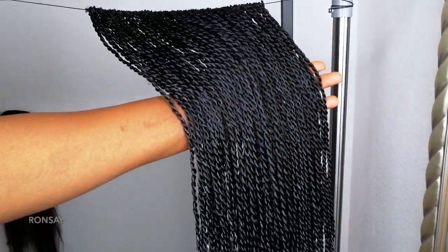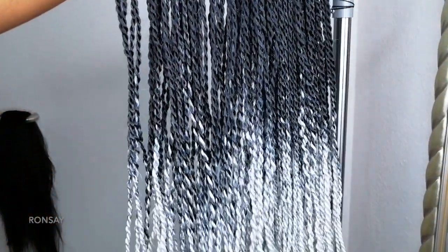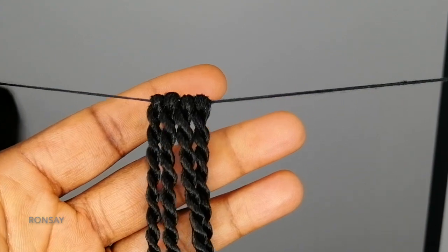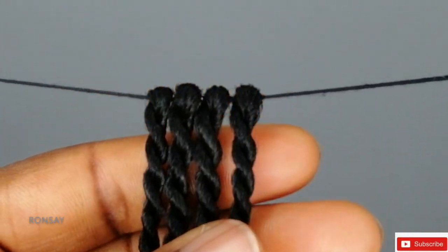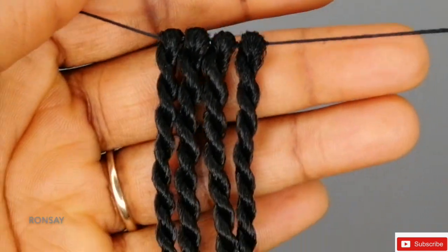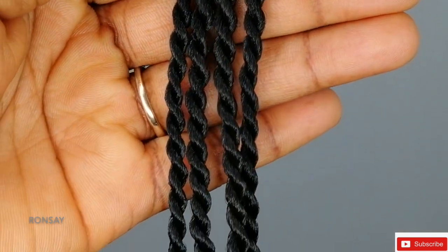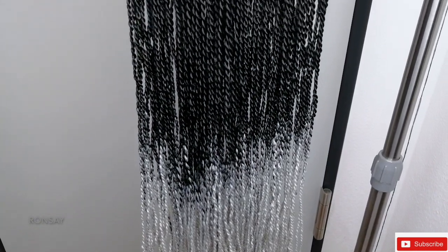Hi everyone, welcome back to my channel. It's your girl Ronse. Today I will be showing you how to make this beautiful crochet Senegalese twist. You can use this for crochet hairstyles of course, and also you can use this to make a wig.